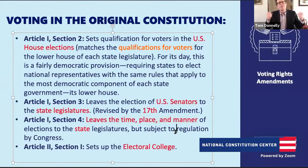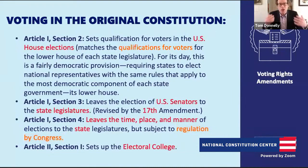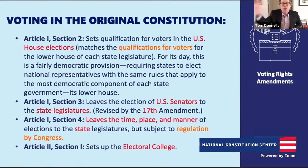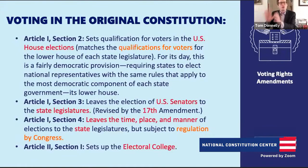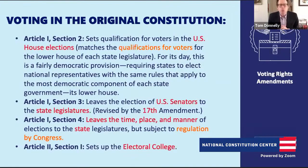Congress also has a role to step in if it wants to regulate certain parts of these areas. Article 1, Section 4 strikes that balance between the powers of the states and the powers of the national government. And finally, Article 2, Section 1 sets up the Electoral College, which is the selection system we use to select our president.